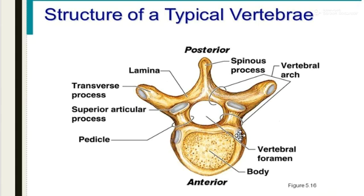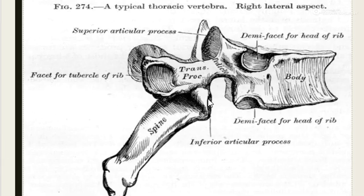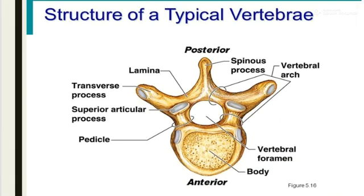The facet present between the vertebral body and transverse process is known as the costal facet. The superior articular process has its own facets known as the superior articular facet, and we can also see the facet for the inferior articular process.